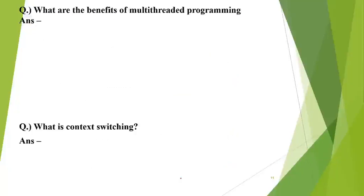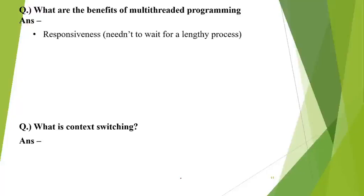Next: what are the benefits of a multi-threaded approach? If we implement multi-threading in systems, what benefits can we achieve? The first benefit is responsiveness — the system will be more responsive and we need not wait for a lengthy process to complete before the CPU is switched to another process. As the CPU switches between different smaller processes, each process gets CPU time in less time, so output is generated faster.